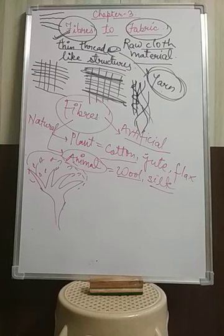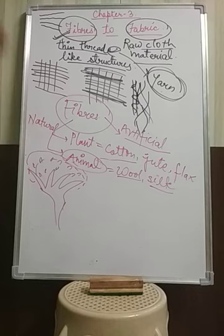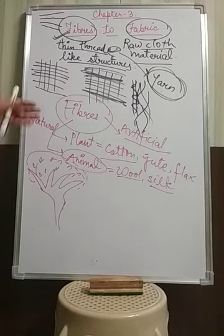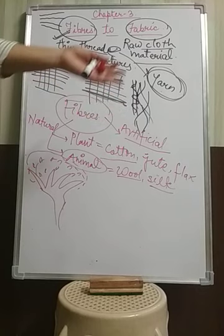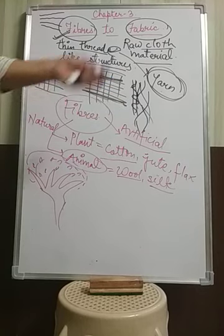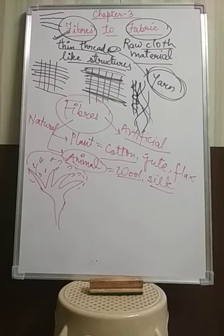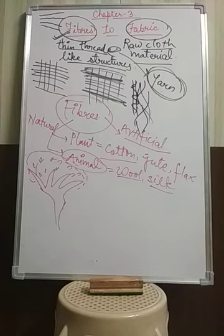For thousands of years, natural fibers were the only ones available for making fabrics. But now, synthetic fibers have revolutionized the textile industry, and nowadays artificial fibers are more widely used to make different types of clothes. For today, it is sufficient. Revise the chapter, and in the next class we will discuss these types of fibers and the weaving of fabrics — how we can weave the fabrics. Thank you very much.